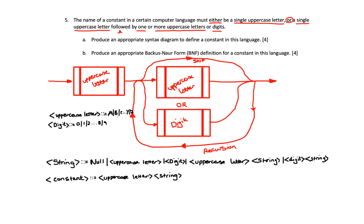So where do the marks actually come from? You get one mark for declaring the uppercase character, one mark for declaring the digit, one mark for declaring the string rule including recursion, and the fourth mark for declaring the correct rule for the constant. For section A: one mark for the compulsory uppercase letter, one mark for the option of uppercase letter or digit, one mark for the null or skip arrow, and one mark for repeating the uppercase letter or digit with an arrow showing direction of travel. In total, two questions, eight marks.